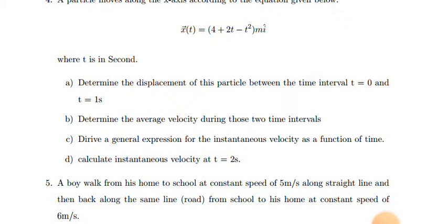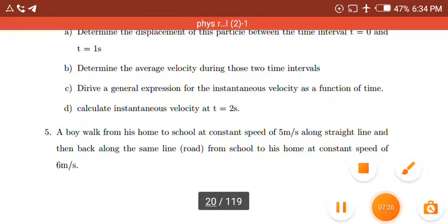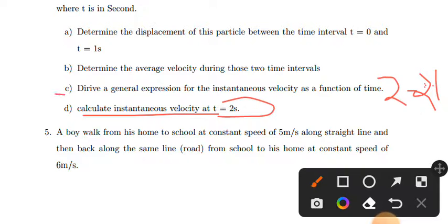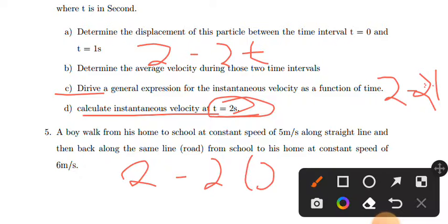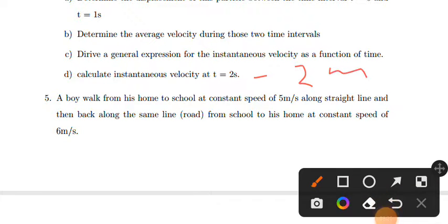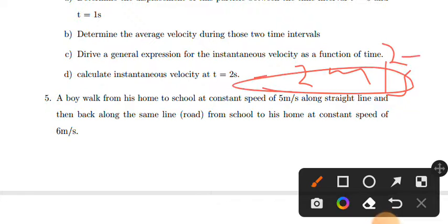For the constant term, the derivative of the constant is zero. So the instantaneous velocity is 2 minus 2t. Now if we calculate the instantaneous velocity at t = 2 seconds, we substitute: 2 minus 2 times 2 = 2 minus 4 = minus 2 meters per second. The instantaneous velocity at t = 2 seconds is minus 2 meters per second.